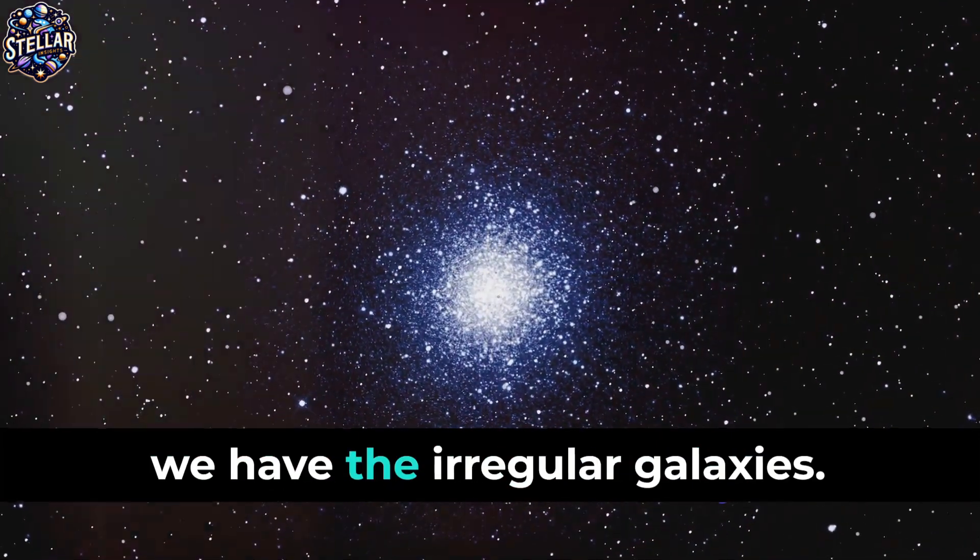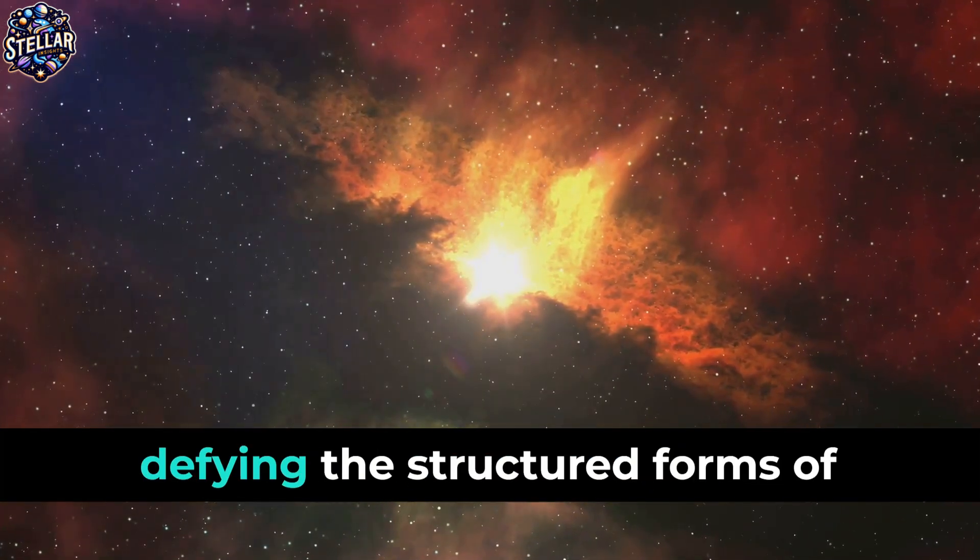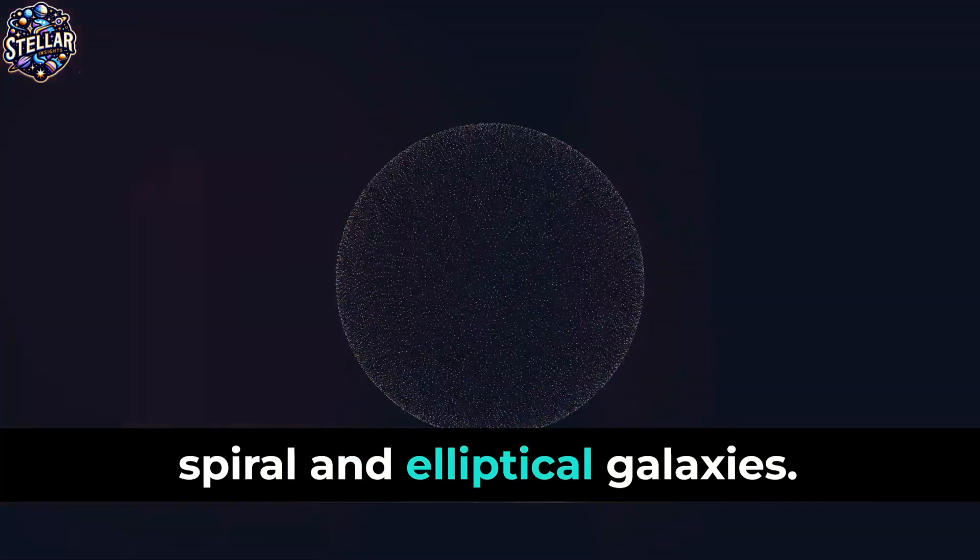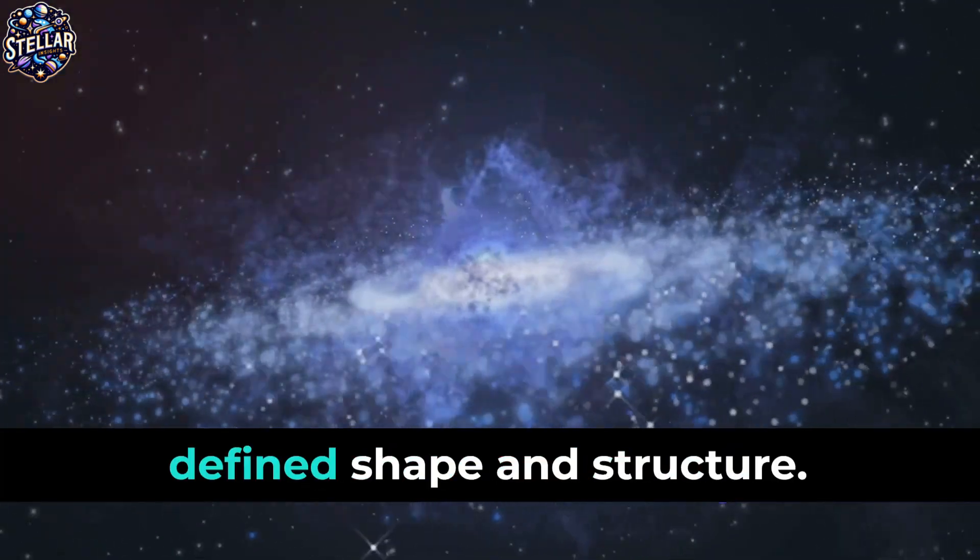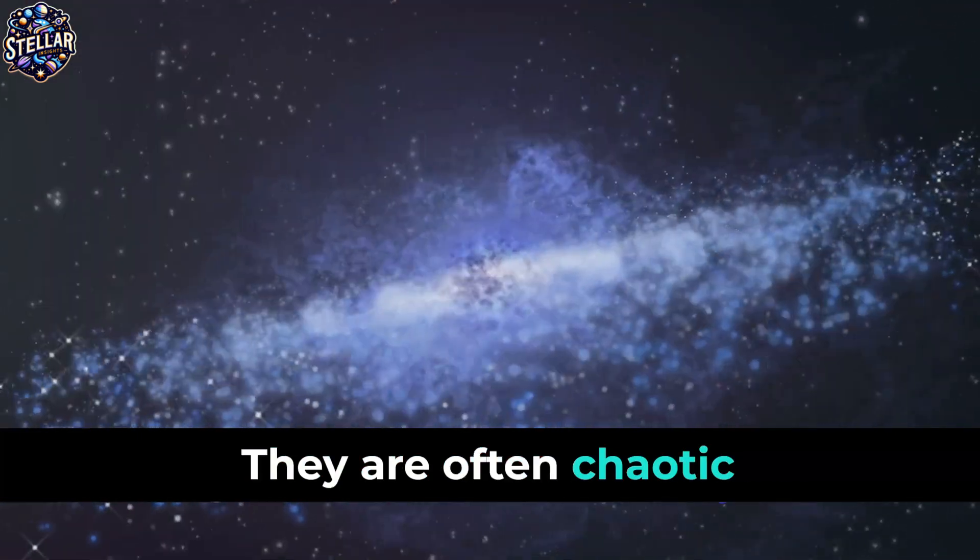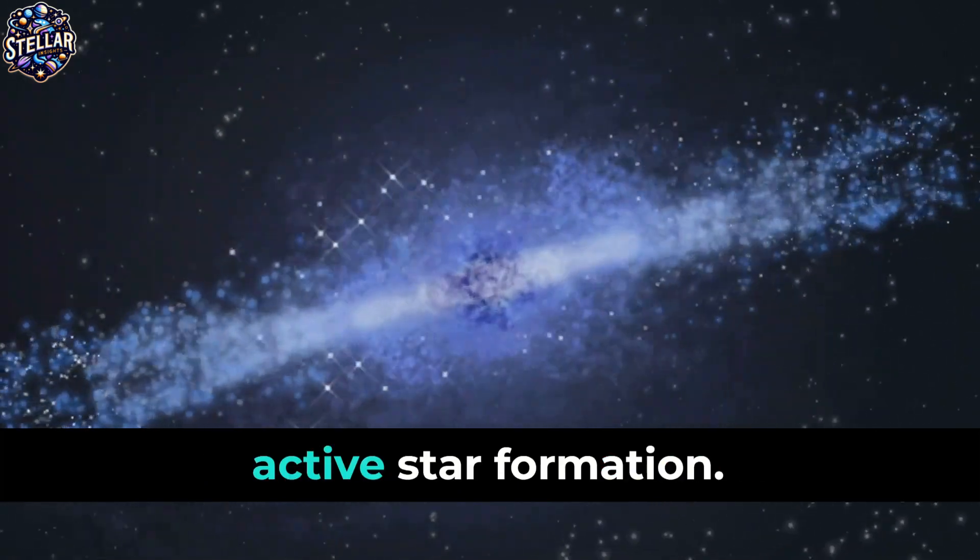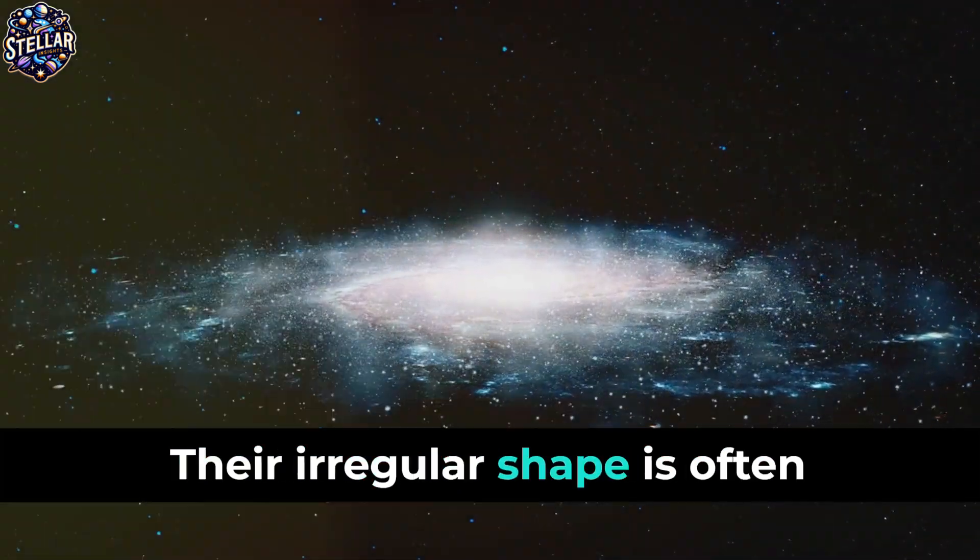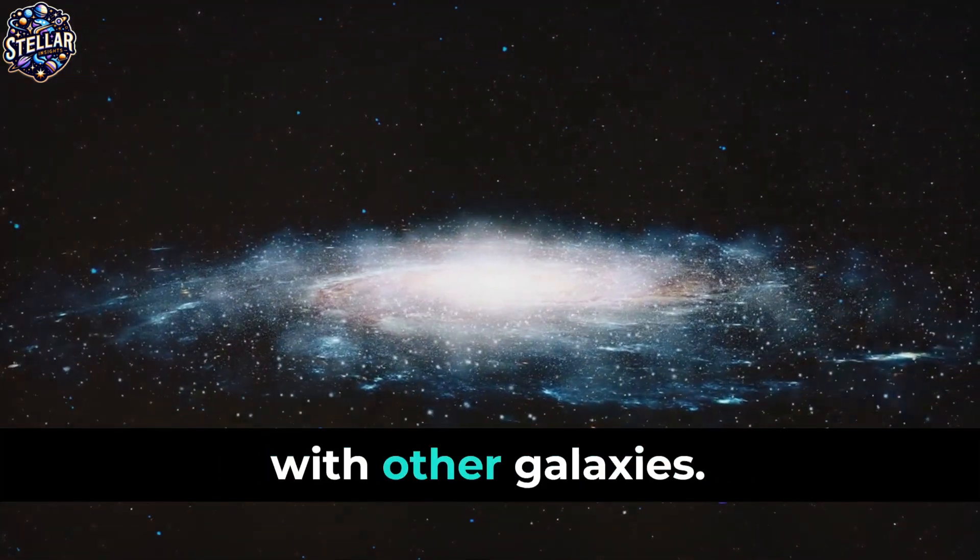Lastly, we have the irregular galaxies. These are the mavericks of the galactic world, defying the structured forms of spiral and elliptical galaxies. Irregular galaxies lack a defined shape and structure. They are often chaotic in appearance, filled with gas and dust and teeming with areas of active star formation. Their irregular shape is often the result of gravitational interactions or collisions with other galaxies.